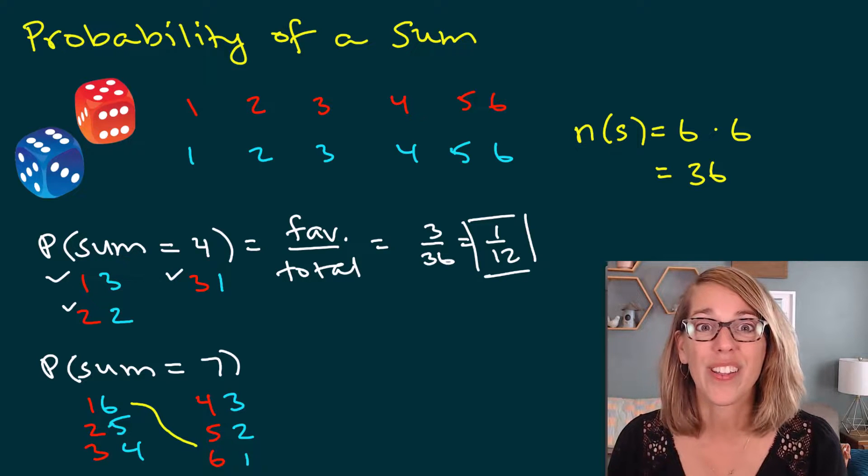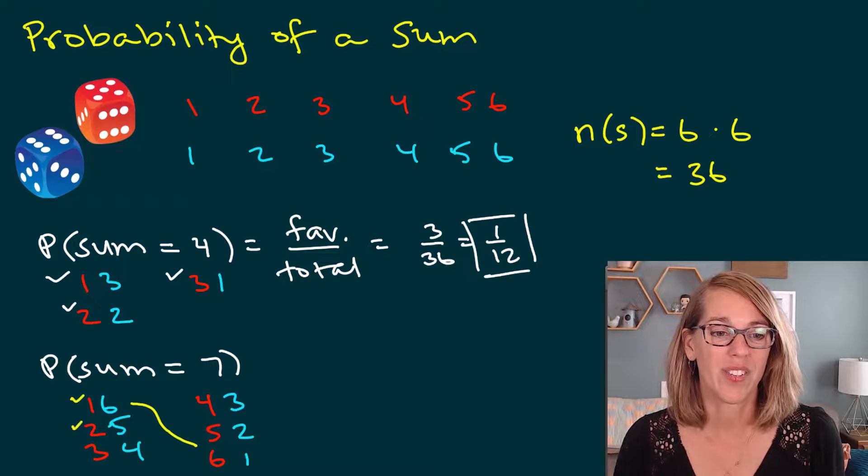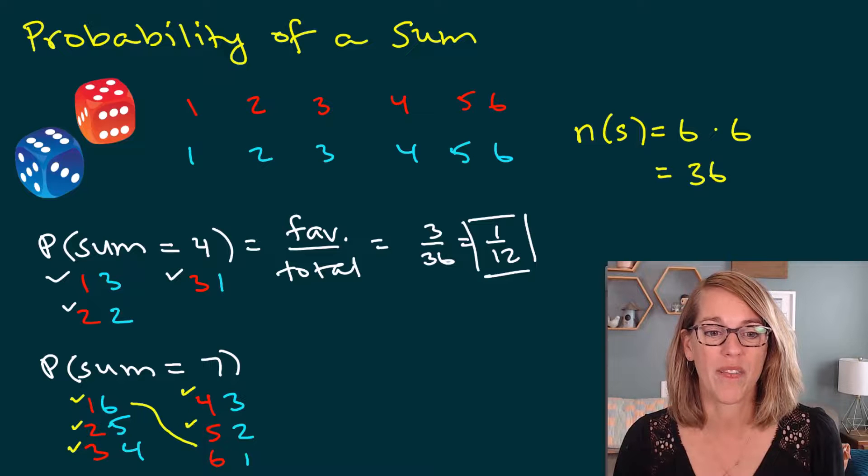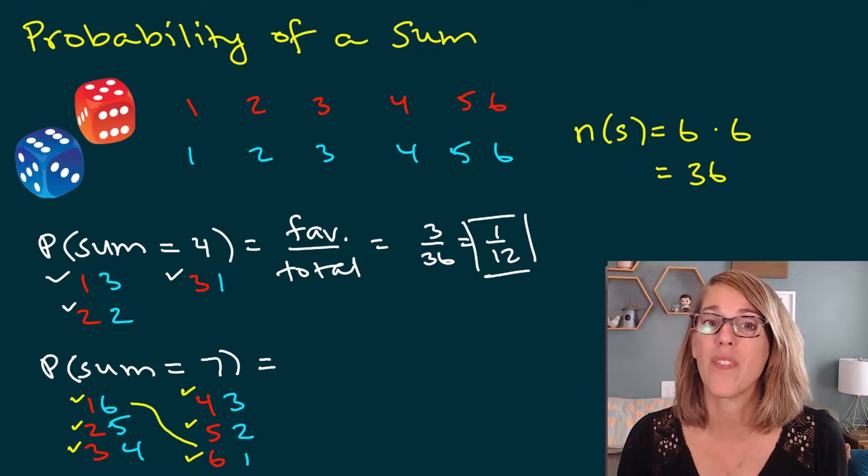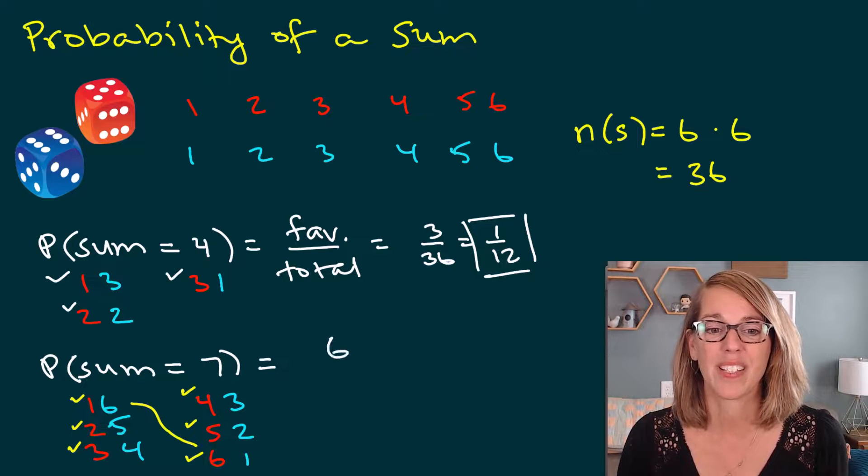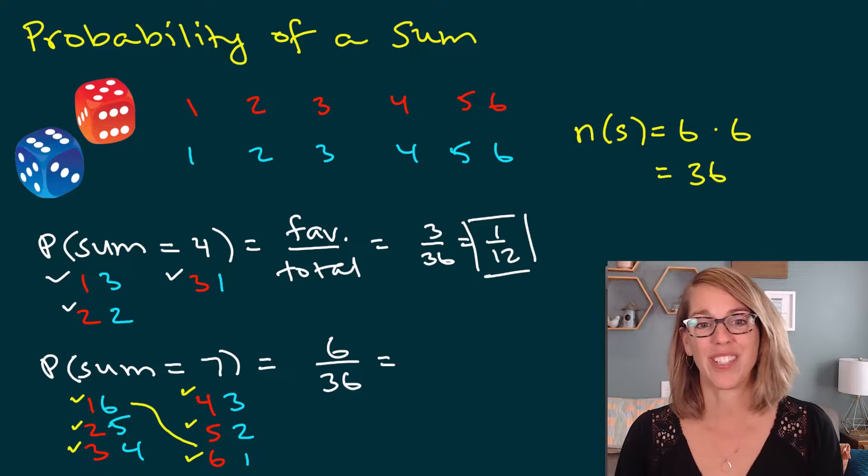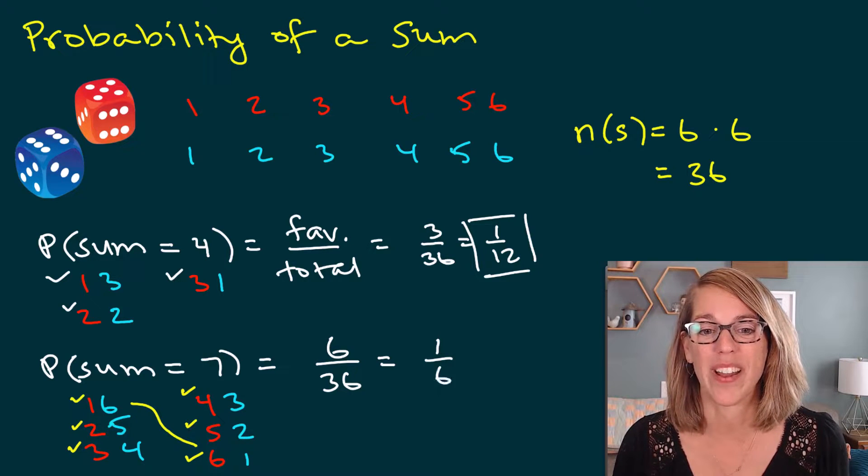So that leaves me with one, two, three, four, five, six possible outcomes. So that would be my favorable. So I've got six favorable outcomes out of my 36. I can reduce that and it becomes one sixth.